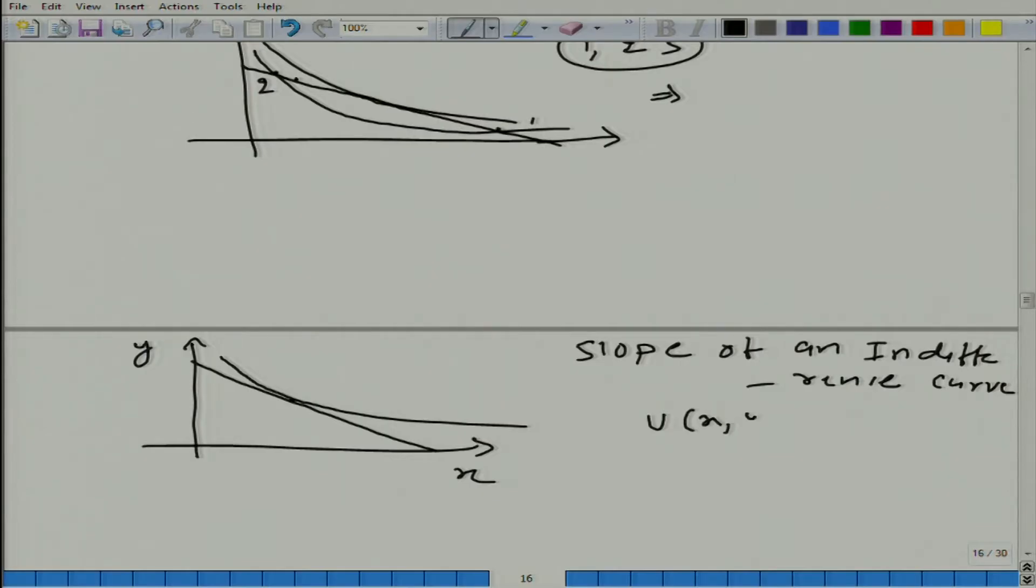It is basically u(x,y). Of course, I am talking about two good world, and is equal to some constant, let us say k0 or we can say u0. It does not matter because it is constant.